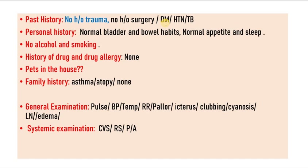Now the examiner may ask you a few questions regarding the history, many of which have already been answered. So it will be easy for you when you present this case. Now moving to general examination, you have to look for pulse, BP, temperature, respiratory rate, pallor, icterus, clubbing, cyanosis, lymph nodes and edema. That's just to complete the examination. For systemic examination, cardiovascular system, respiratory system and abdomen are to be examined. Sometimes patients with allergic rhinitis may have rhonchi or wheeze, but patients with DNS may not have rhonchi and wheeze.